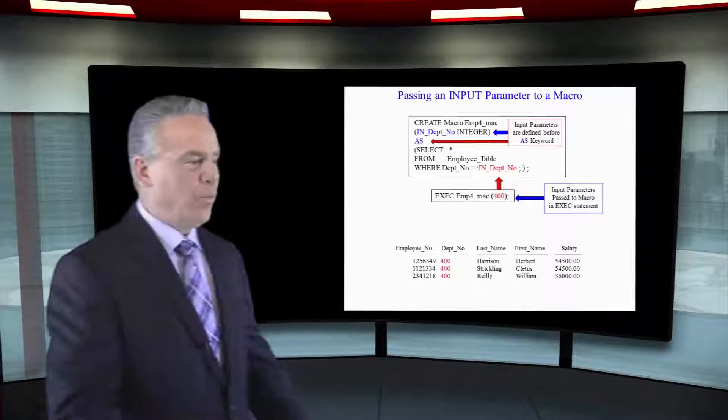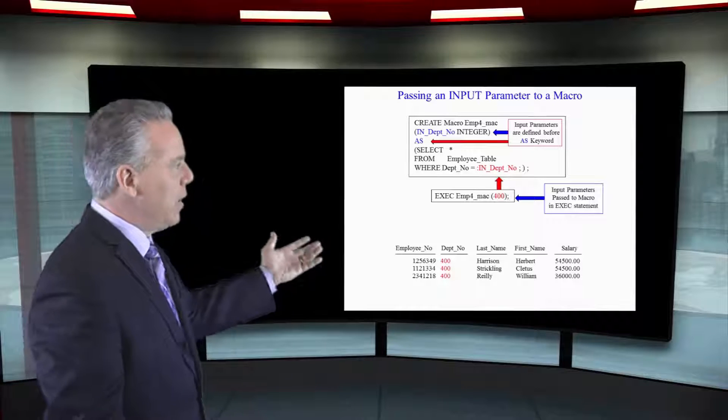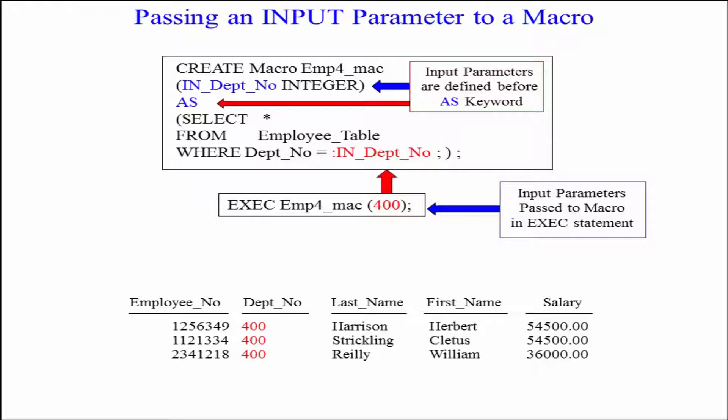We create the macro, and when we execute it and we put a 400 in there, it says, oh, you wanted me to select everything from the employee table where the department number is equal to 400.